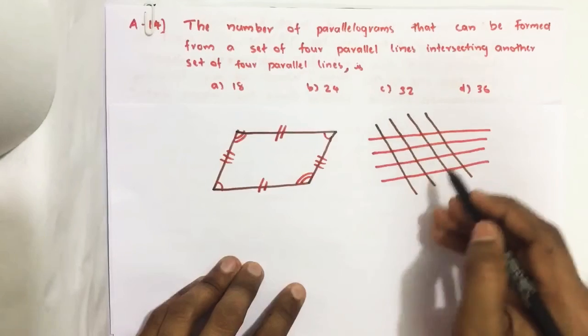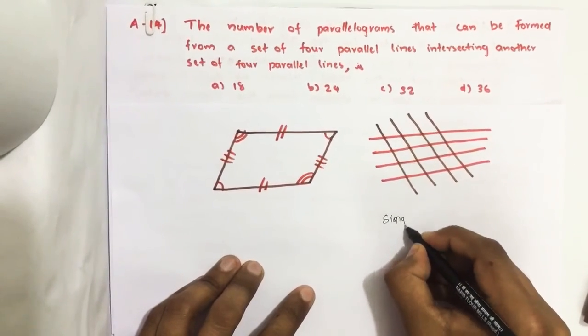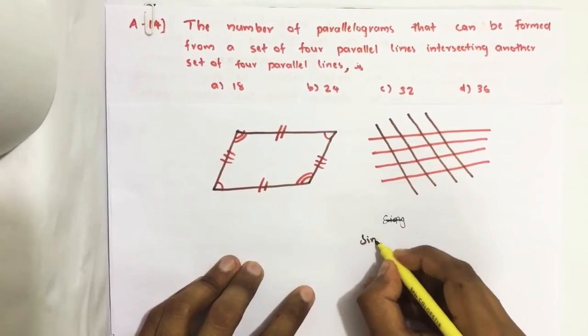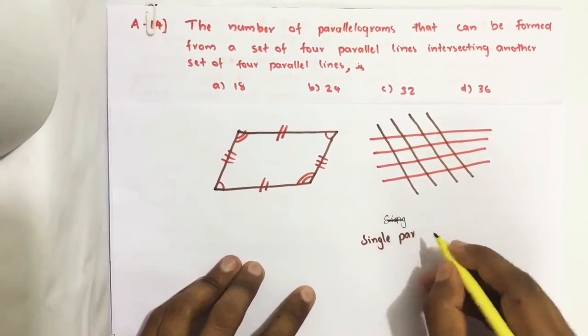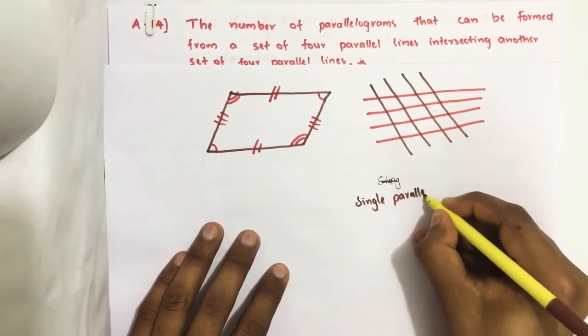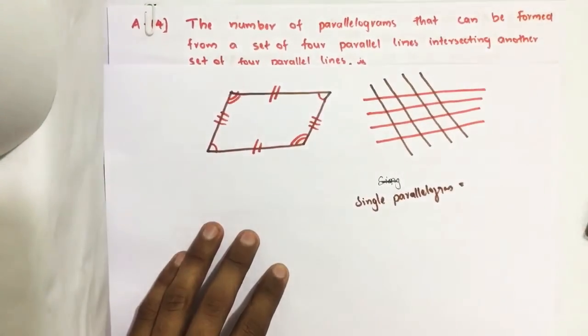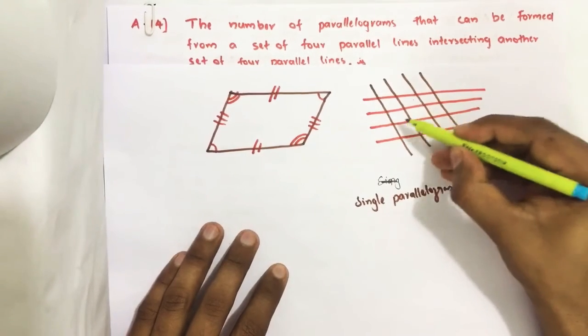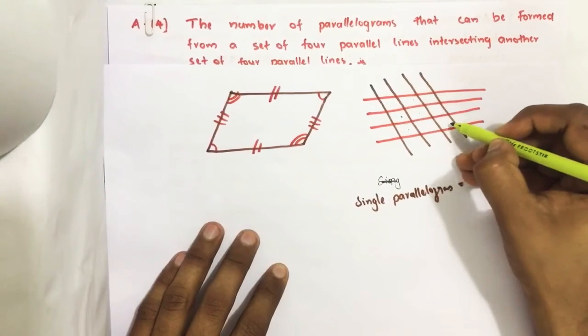Single parallelograms, which equals - we count 1, 2, 3, 4, 5, 6, 7, 8, 9.